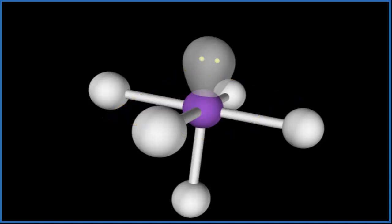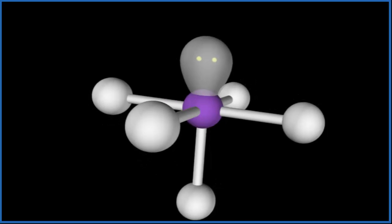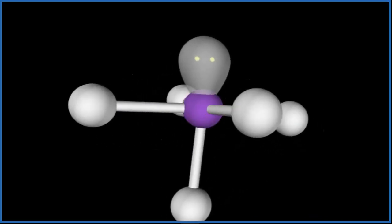If you wanted to look at the electron geometry here, it would be octahedral because we need to take this lone pair into account when we look at electron geometry. Let's go back to the Lewis structure.